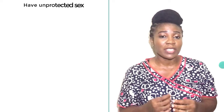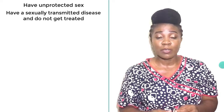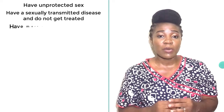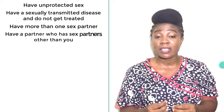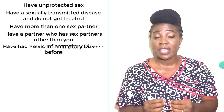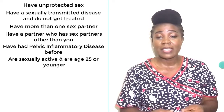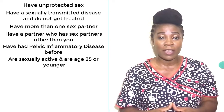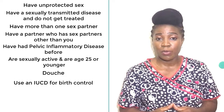You're more likely to contract pelvic inflammatory disease if you: one, have unprotected sex; two, have a sexually transmitted disease and do not get treated; three, have more than one sex partner; four, have a partner who has sex partners other than you; five, have had PID before; six, are sexually active and are age 25 or younger; or seven, use an IUD for birth control.